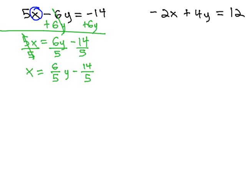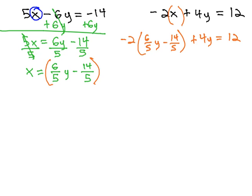And the fractions aren't bad, just a little inconvenient, but the process is still the same. If x is equal to this expression, we can replace the x in the other equation with this expression. So, we'll now have negative 2 times, in parentheses, 6 fifths y minus 14 fifths, plus 4y equals 12.